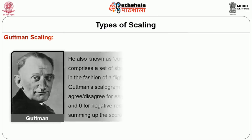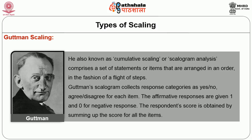Guttman scaling is also known as Cumulative Scaling or Scalogram Analysis. It comprises a set of statements or items arranged in order in the fashion of a flight of steps. It suggests that an affirmative response to any given statement implies an affirmation of the preceding statements. For example: 'Would you be willing to accept a black person as a visitor to your country?', 'Would you be willing to have a black person living next door to you?', 'Would you be willing to make friendship with a black person?', and 'Would you be willing to marry a black person?' A respondent who is willing to marry a black person is presumed to be accepting all the preceding statements. Guttman's Scalogram collects response categories as yes or no, or agree or disagree for each item.